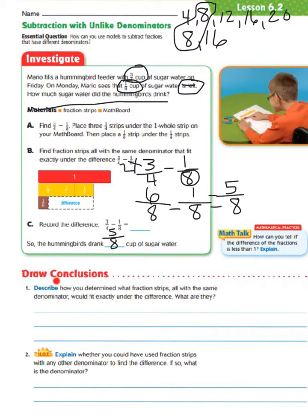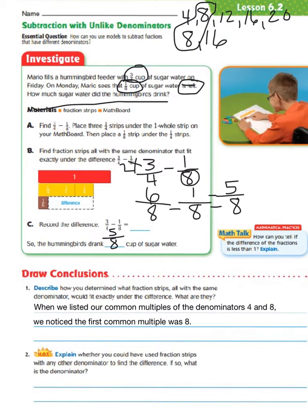Let's jump down to our draw conclusions. Describing how we determined which fraction chips with the same denominator fit under the difference — we saw that we had to use eighths because when we listed our multiples, the very first common multiple was 8. So when we listed the common multiples of the denominators 4 and 8, we noticed the first common multiple was 8.